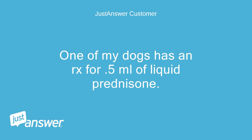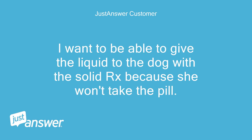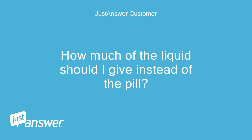One of my dogs has an RX for 5 mL of liquid prednisone. The other has an RX of 5 mg of prednisone. I want to be able to give the liquid to the dog with the solid RX because she won't take the pill. How much of the liquid should I give instead of the pill?